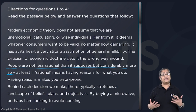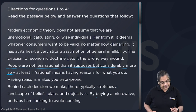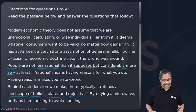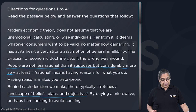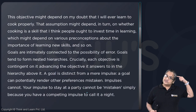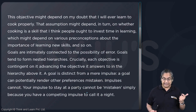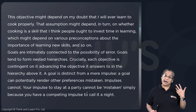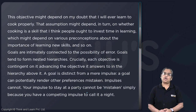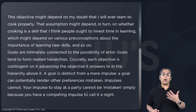Behind each decision we make, there typically stretches a landscape of beliefs, plans, and objectives. He gives an example of buying a microwave: I am buying a microwave perhaps to avoid cooking. That objective might depend on whether cooking is a skill I want to invest time in learning, which might depend on preconceptions about learning new skills. So there are a series of interconnected thoughts, plans, and objectives behind every action.